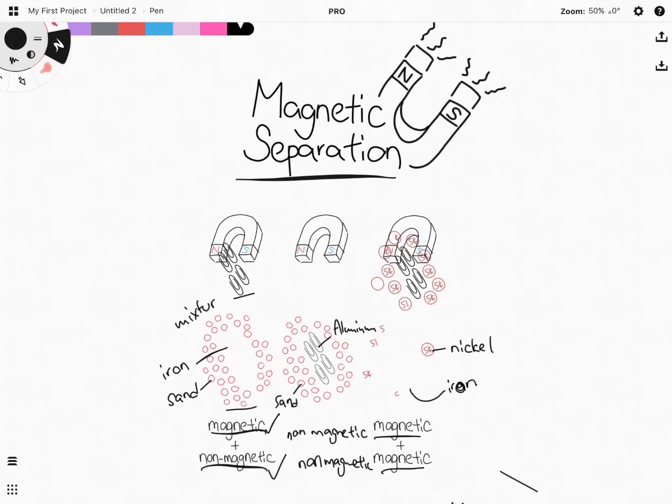If more than one of the substances are magnetic, then hovering a magnet over the mixture will just attract out both of the substances that are magnetic. So it's not a blanket case of when you want to use magnetic separation.